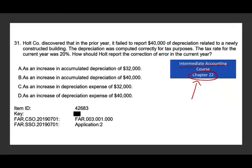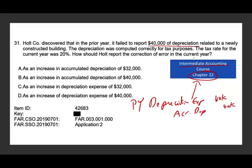Holt company discovered that in the prior year it failed to report $40,000 of depreciation related to a newly constructed building. The depreciation was computed correctly for tax purposes. The tax rate for the current year was 20%. How should Holt report the correction of this error in the current year? They should have debited depreciation expense $40,000 and credited accumulated depreciation $40,000. So what should they do now to correct this error?